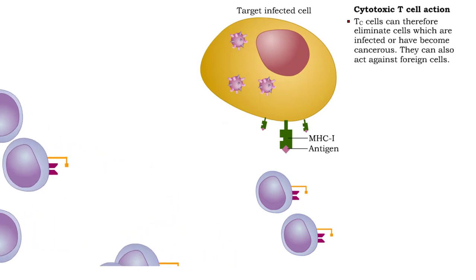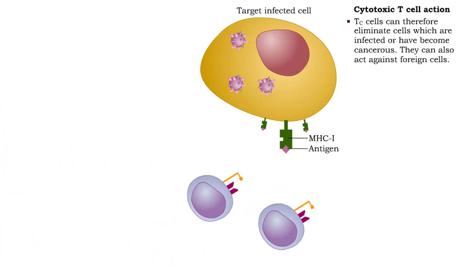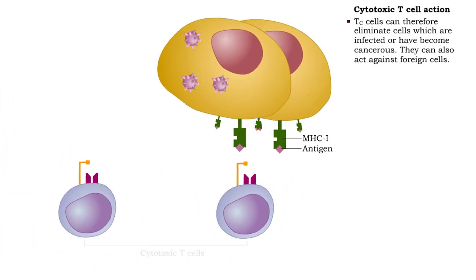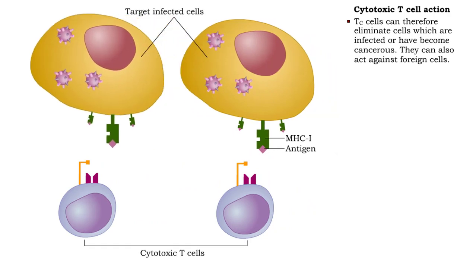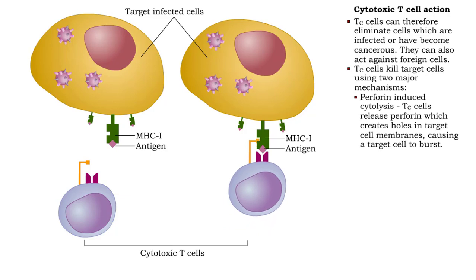Cytotoxic T cells can eliminate cells that are infected or have become cancerous. They also act against foreign cells in two ways. The first mechanism is perforin-induced cytolysis.